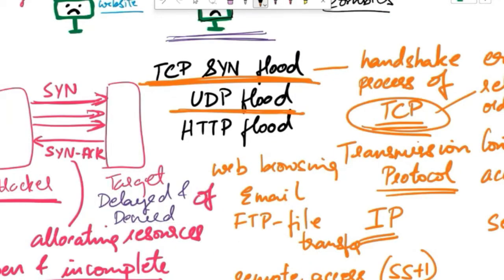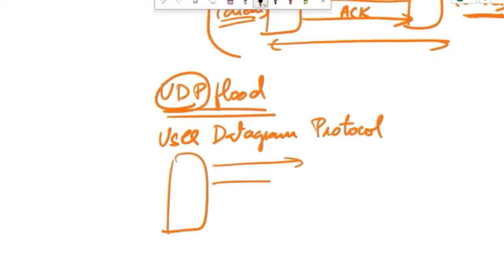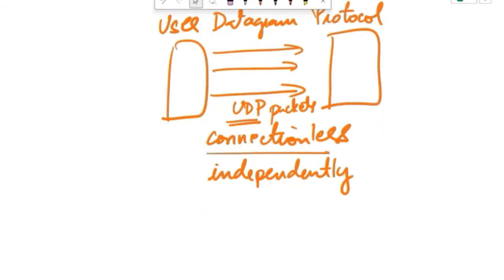The next attack type is UDP flood attack. UDP flood is a denial of service attack that targets servers or networks by overwhelming them with a flood of UDP packets. UDP stands for user datagram protocol. There are two devices and the attacker sends a large number of UDP packets to the target server or network. Unlike TCP, UDP is connectionless. That is, each packet is sent independently and does not require a handshake process to establish a connection.